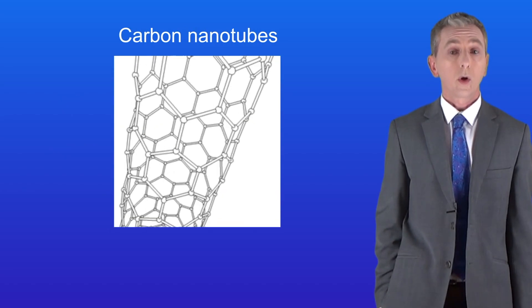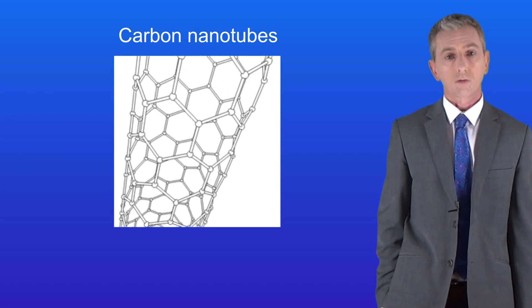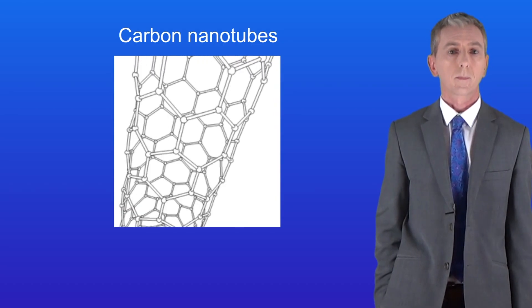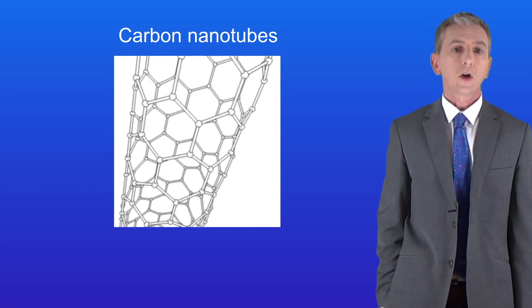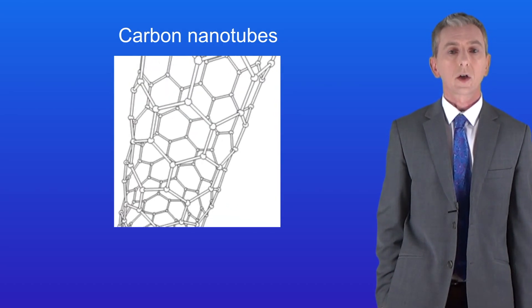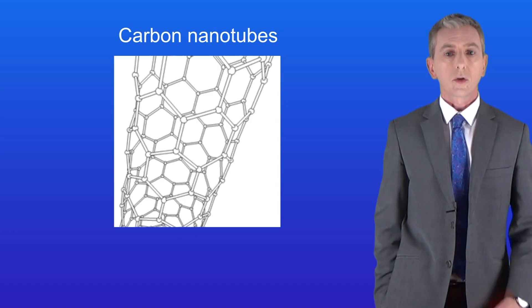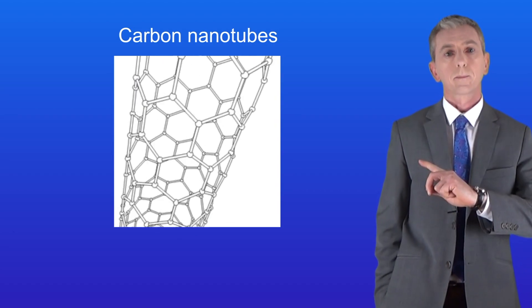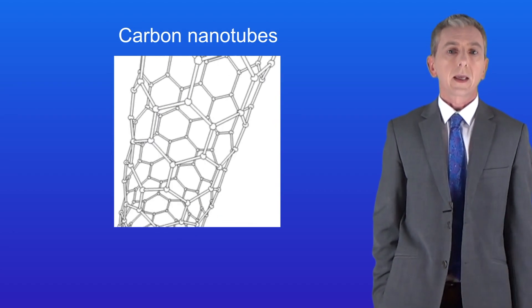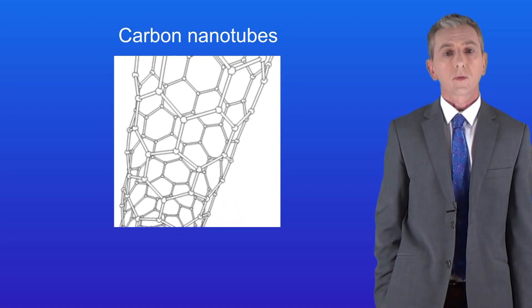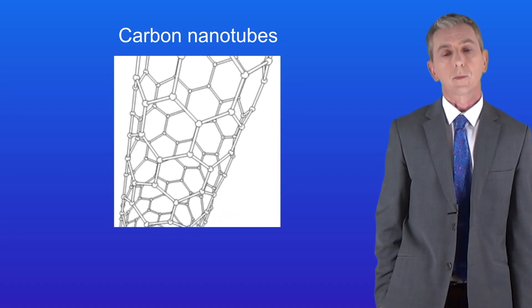One really interesting group of fullerenes are called carbon nanotubes. These are fullerenes shaped into long cylinders, as shown here. You can see that we've got rings formed from six carbon atoms.